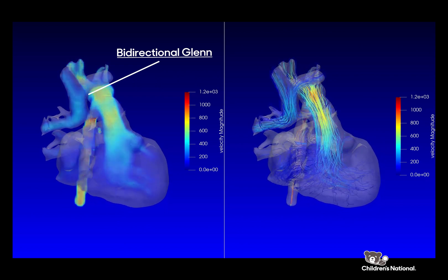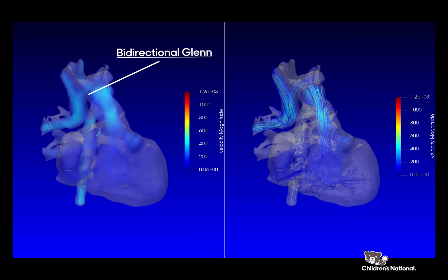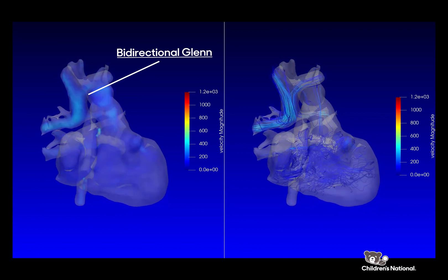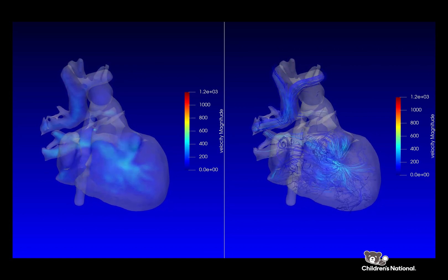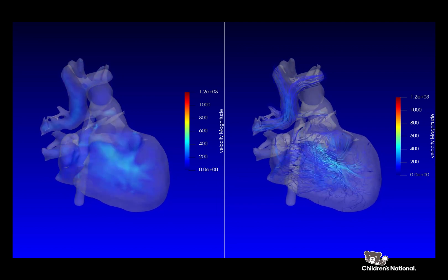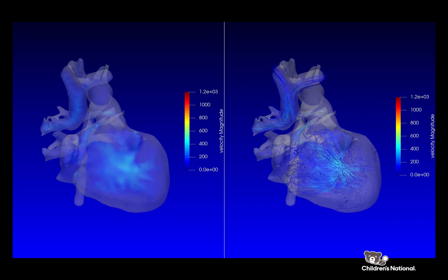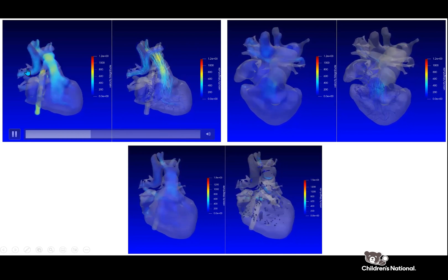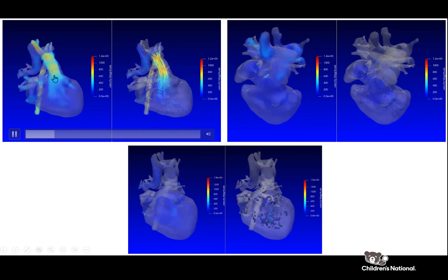This set of images is obtained as part of planning for the next operation, which is the Fontan procedure, connecting a conduit from the inferior vena cava — the vein connecting the lower part of the body and the legs — into the Glenn, thereby creating a circulation where both the superior vena cava and inferior vena cava drain blood directly into the lungs. When all the blood flow is passively flowing into the lungs with that kind of circulation, the health of the heart pump is very important.